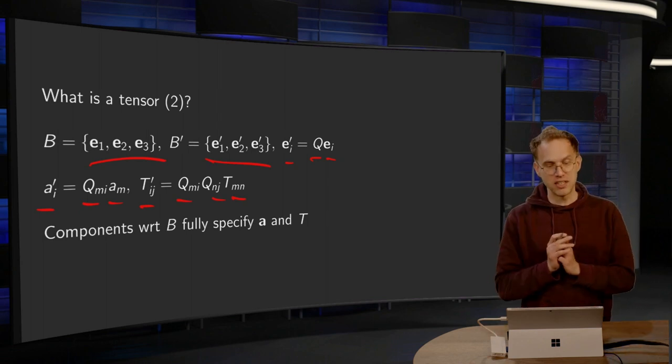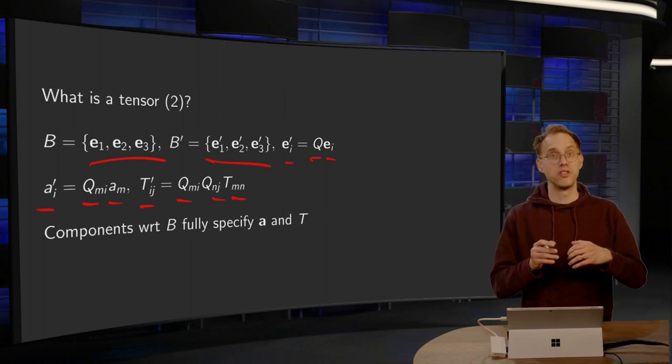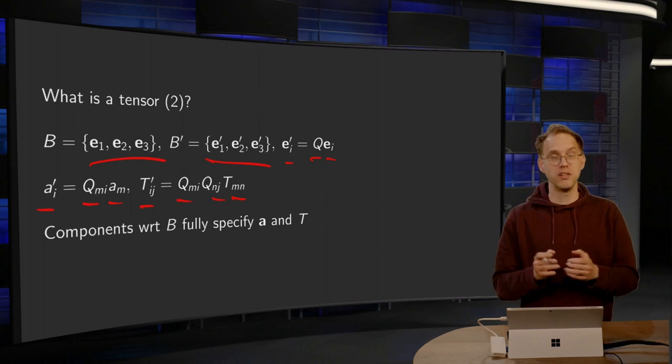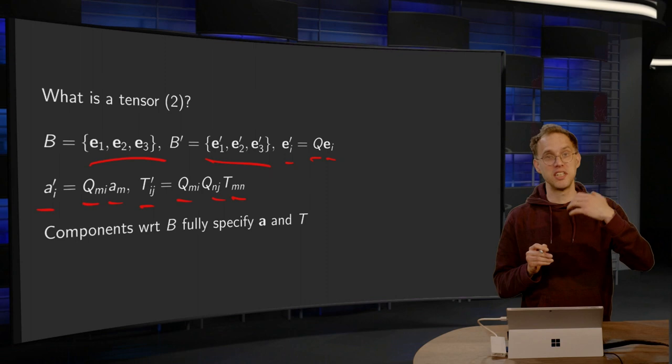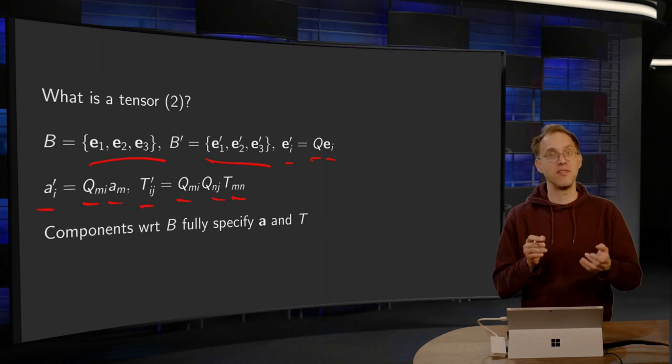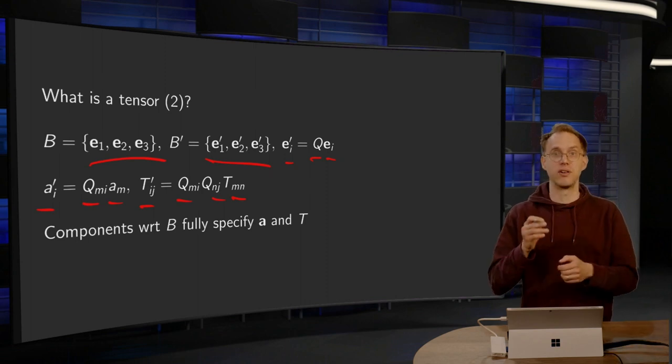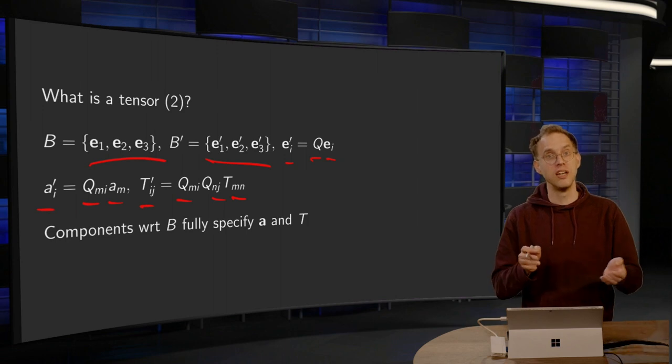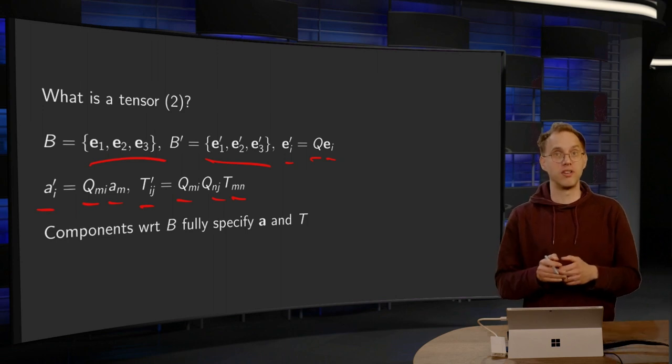And this means that the components with respect to some basis B will fully specify a and T. So instead of talking about a vector a, we can talk about a vector ai, or instead of talking about a tensor T, we can talk about a tensor Tij